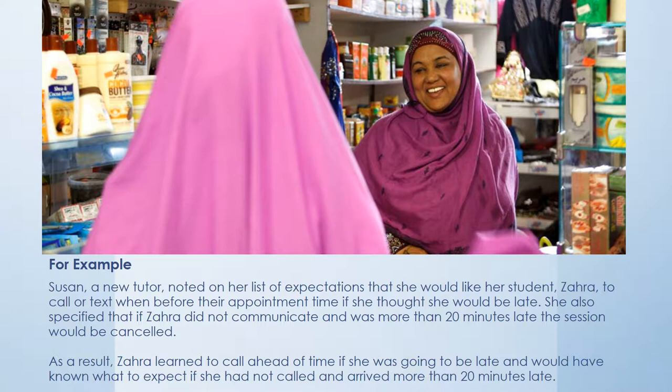Let's look at a couple of examples. We'll take Susan, a new tutor, who noted on her list of expectations that she would like her student Zara to call or text before their appointment time if she thought she was going to be late. She also specified that if Zara did not communicate and was more than 20 minutes late for the session, it would be canceled. As a result, Zara learned to call ahead of time if she was going to be late, and would have known what to expect had she not arrived within that 20-minute period and found her tutor not there.